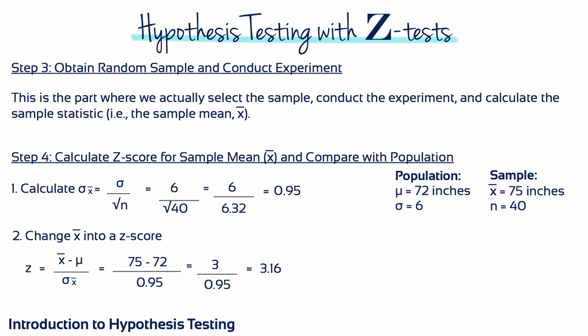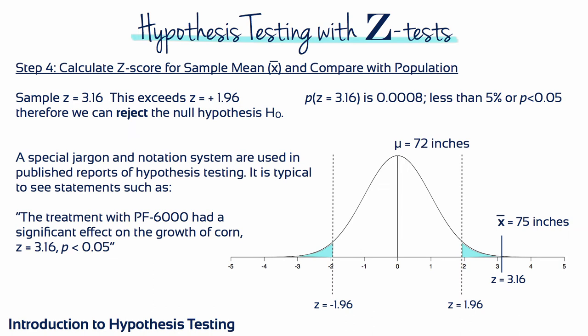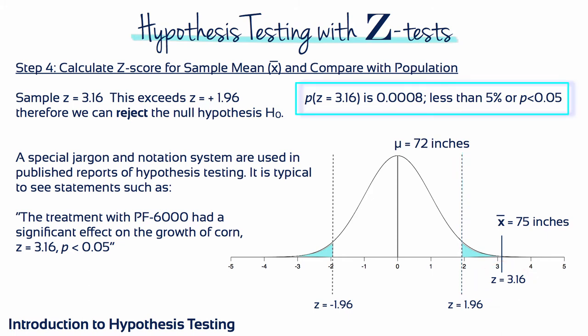Step 3 is the part where we actually select the sample, conduct the experiment, and calculate the sample mean. Step 4: Converting this sample mean into a z-score gives us a value of 3.16. Our sample z-score of 3.16 exceeds the upper critical region boundary of 1.96. Therefore, we can reject the null hypothesis. The probability of obtaining a z-score of 3.16 is 0.08%, in other words less than 5%. It's typical to report: the treatment with Plant Food 6000 had a significant effect on the growth of corn, z equals 3.16, with a p-value of less than 0.05.